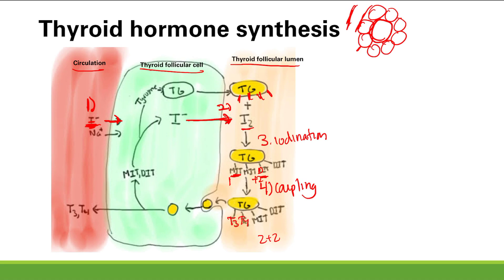Now you have T3 and T4 still attached to the thyroglobulin. The thyroid cell engulfs it back into lysosomes, which digest the thyroglobulin and release the T3 and T4 into the circulation. You also recycle the iodide residues from the MIT and DIT. Step five is uptake back into the thyroid cells, then the thyroid hormone is kicked out into circulation and the iodine is recycled.